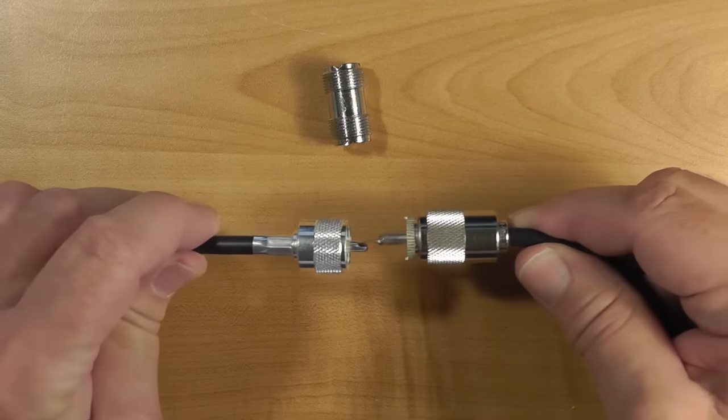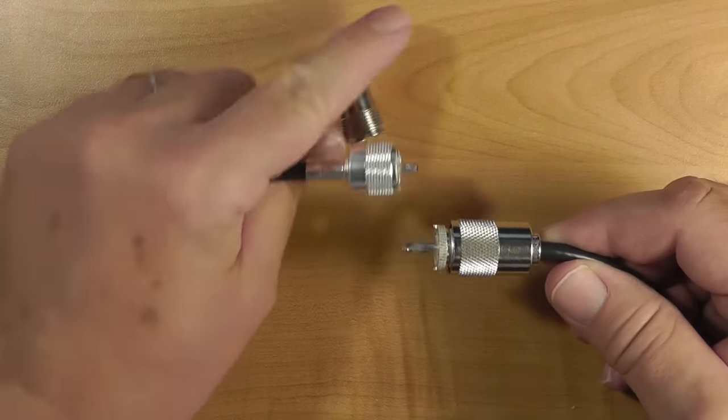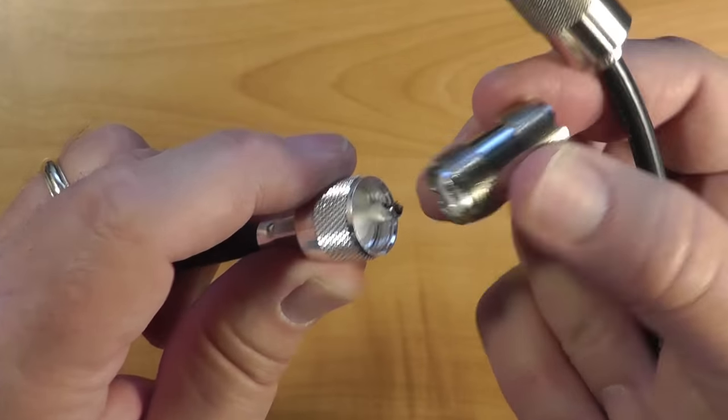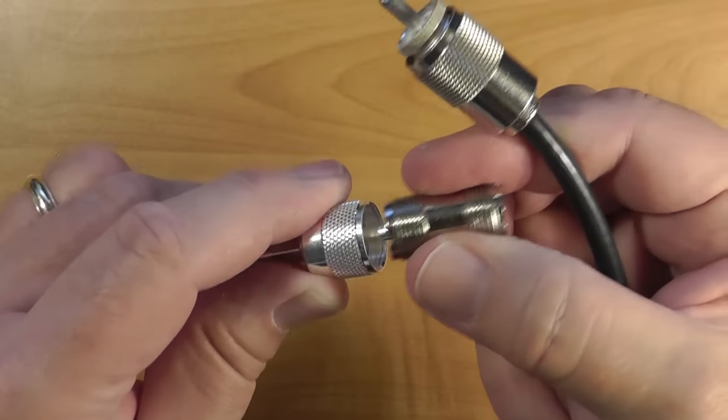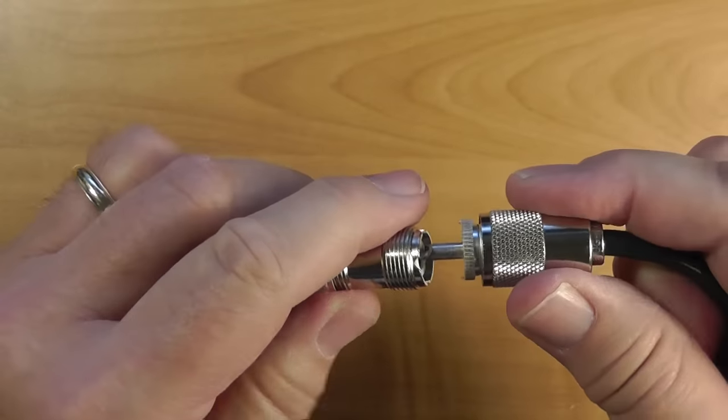Sometimes, you'll need to connect two coax cables together. To do this, you use a so-called barrel connector. A barrel connector has two female ends. So, a male cable connector goes in this side, and then another male cable connector goes in the other.